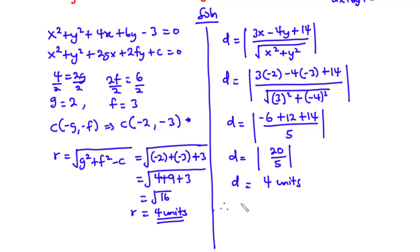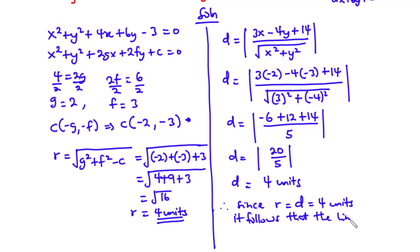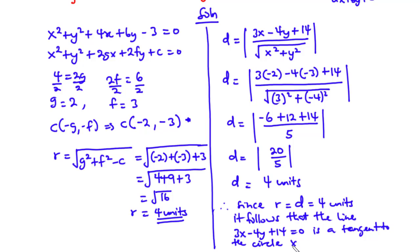Since the radius r = 4 units and the perpendicular distance D = 4 units, we have r = D. It follows that the line 3x − 4y + 14 = 0 is a tangent to the circle x² + y² + 4x + 6y − 3 = 0.